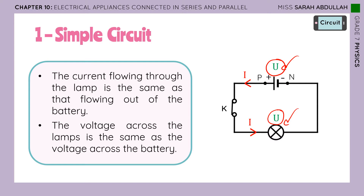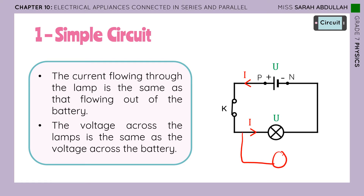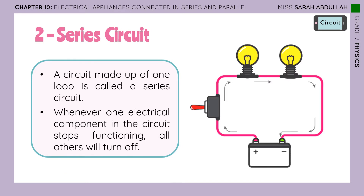In this chapter, we are going to talk about the series circuit, where we will add another lamp and see how the current and voltage change. We will also talk about the parallel circuit, where we add another lamp in another loop and see what changes. Let's start with the series circuit.